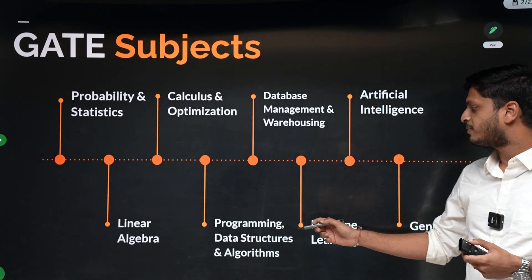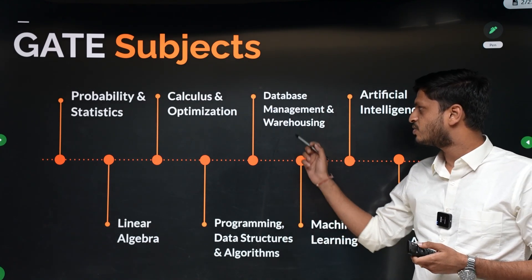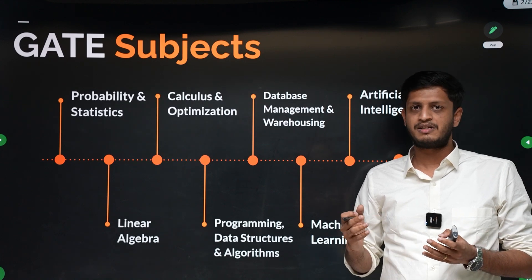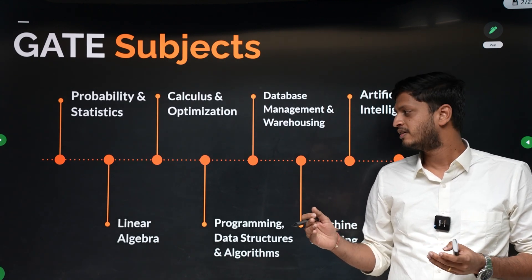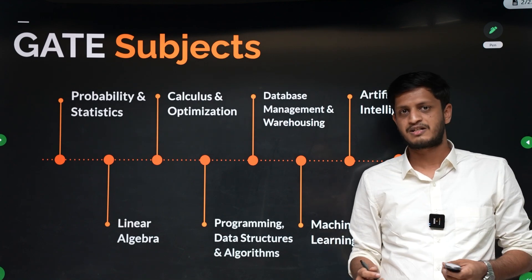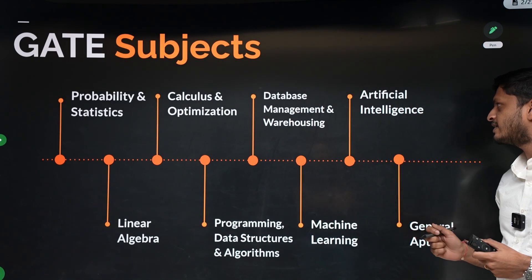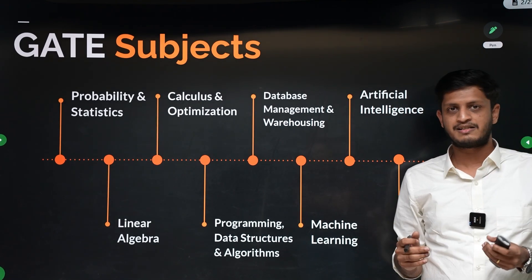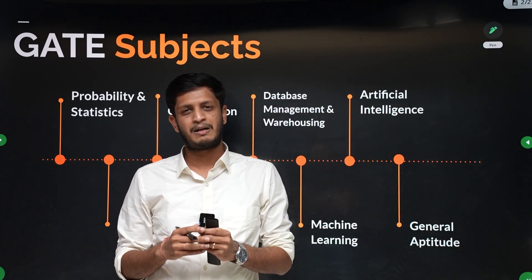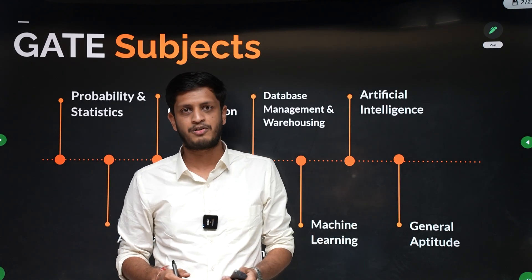We have programming, data structures, algorithms, and DBMS and warehousing — these two are the same as in the GATE CS syllabus. Then we have machine learning and artificial intelligence, which are purely GATE DA subjects. For aptitude, the weightage is fixed for all GATE branches — 15 marks of questions come from here.